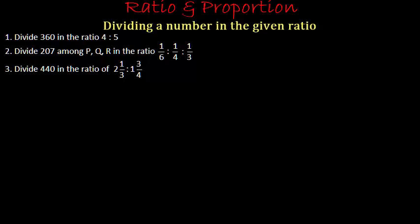So how do we solve it? First, we have to convert these ratios into the simplest form — that means the ratio in the form in which each term is an integer. We will do that and then divide the number in the given ratio. So we will solve all three problems one by one. Let's start with problem number one.